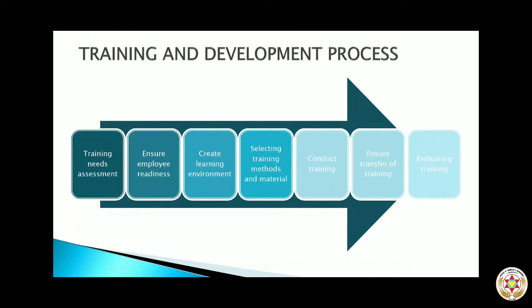The training and development process is basically a seven-step process. Step one: identify the training needs — assess what training employees require. Step two: ensure employees' readiness — it is important that employees are also ready to take the training, because if training is given forcefully, employees cannot give their best. Step three: create a learning environment — a proper learning environment should be created in the organization so that employees enjoy their training period.